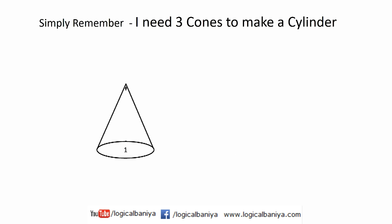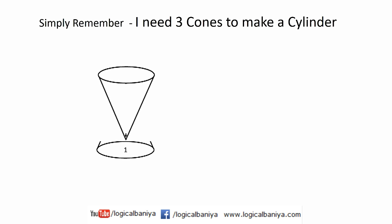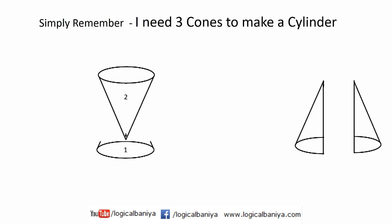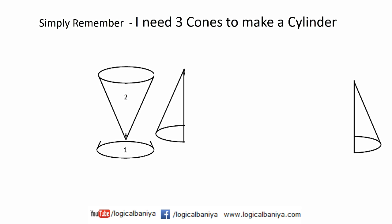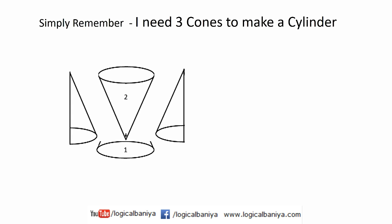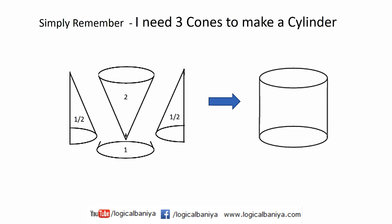My first cone and my second cone — I'll merge my first cone with the second cone so I get the top and the base of the cylinder. I'll take the third cone and split it into two parts. One half of the broken cone goes to the right of the cones and the other half to the left. Now if you join these three cones together, you will get a cylinder.